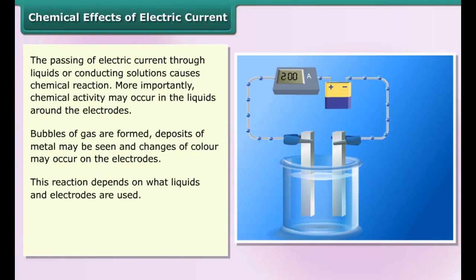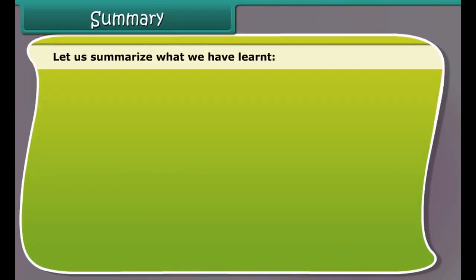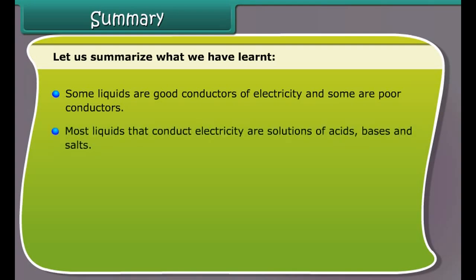Cans used for storing food are made by electroplating tin onto iron. Thus food does not come into contact with iron and is protected from getting spoiled. Iron is used in bridges and automobiles to provide strength. However, iron tends to corrode and rust, so a coating of zinc is deposited on iron to protect it from corrosion and rusting.